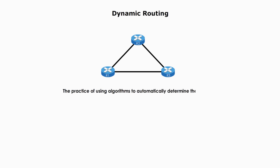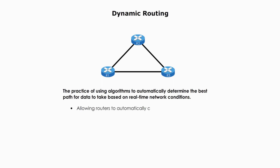Dynamic routing refers to the practice of using algorithms to automatically determine the best path for data packets to take, based on real-time network conditions. Routers use dynamic routing protocols to communicate with each other and exchange information about available routes and network conditions. Dynamic routing allows routers to automatically adapt to changes in the network, such as the failure of a network link or the addition of new routers, making it more flexible and resilient than static routing.